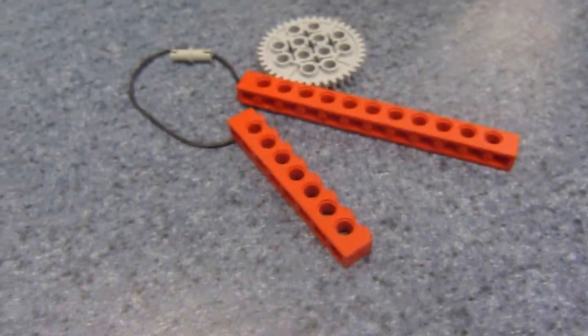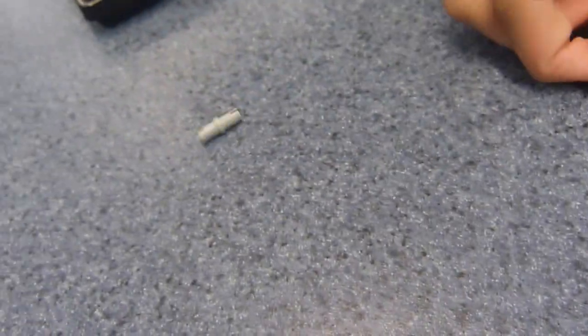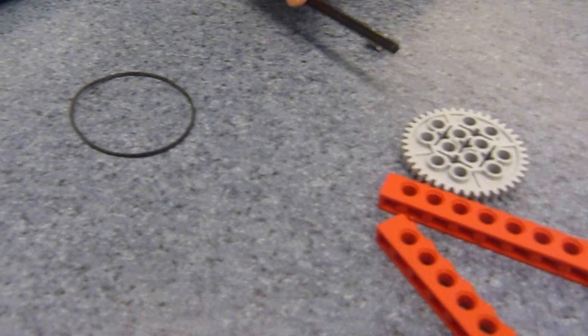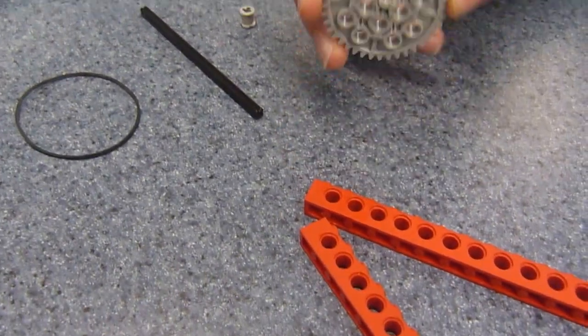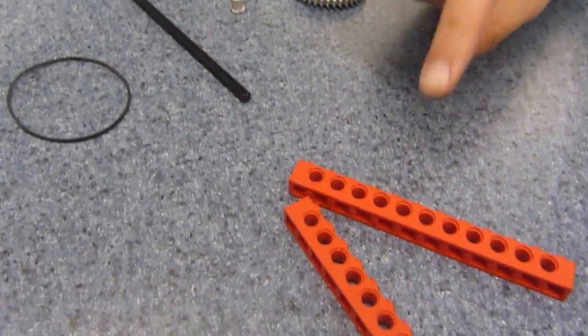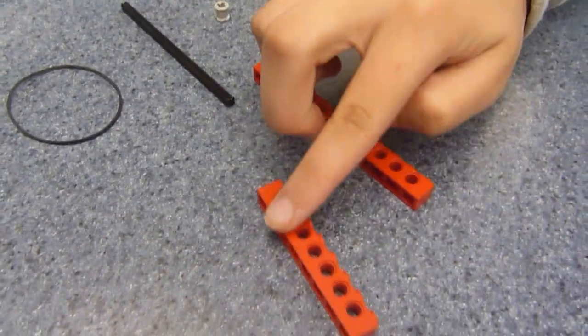For this you'll need seven different pieces. You need one connector peg, an elastic band, a 12 stud cross axle, a one bushing for cross axle, a 40 tooth gear, a 1x12 LEGO piece, and a 1x8 LEGO piece.